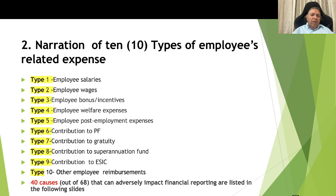Similarly, there are 10 types of employee-related expenses: Type 1 employee salaries; Type 2 employee wages, primarily for blue-collar workmen; Type 3 employee bonus and incentives; Type 4 employee welfare expenses; Type 5 employee post-employment expenses; Type 6 contribution to provident fund; Type 7 contribution to gratuity fund; Type 8 contribution to superannuation fund in some companies; Type 9 contribution to ESIC, which is Employee State Insurance Corporation; and Type 10 other employee reimbursements. There are 40 causes which originate from these 10 types of employee-related expenses that can adversely impact financial reporting.